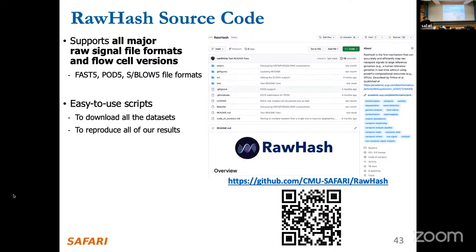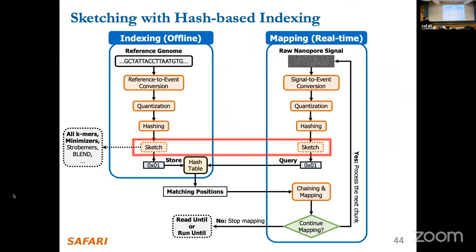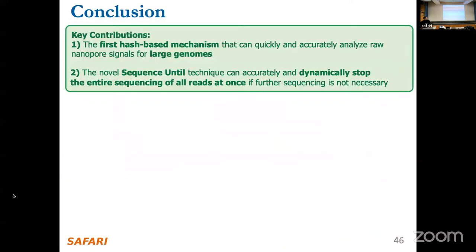One benefit of generating hash values for similarity search is that this same approach is used for base-called reads. This means we can now utilize improvements developed for base-called reads for raw signals as well. One such improvement is sketching — sampling mechanisms for selecting which seeds or subsequences to use. For example, we could use minimizers, strobemers, or BLEND as sketching techniques to further improve similarity search with hash values.